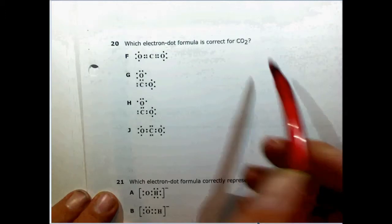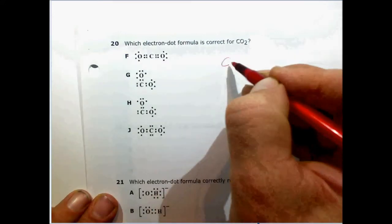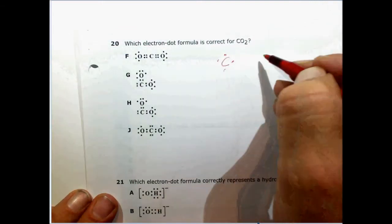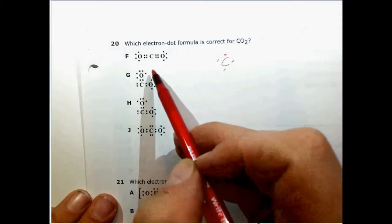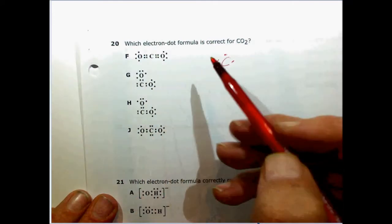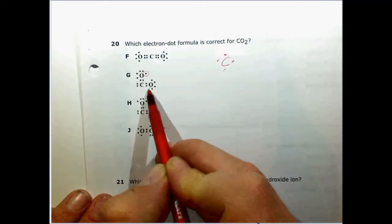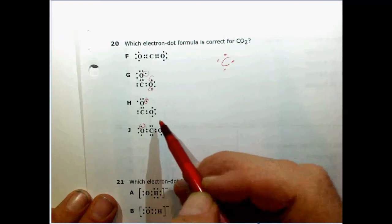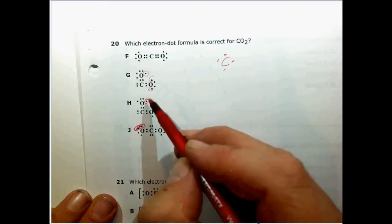Number 20 says which electron dot structure is correct for CO2? You know that carbon typically has 4 electrons around it and oxygen typically has 6. So if we look, we can make sure that these have the total number of electrons that we need. First, let's get rid of some of the ones that are obviously wrong. This one here has a free electron in several places, as does this one. This one doesn't—I take that back, that's a pair. But this one has free electrons.